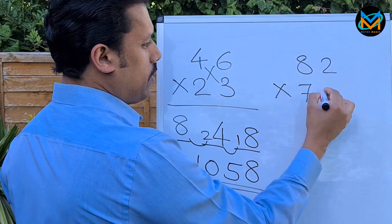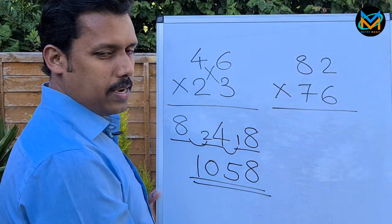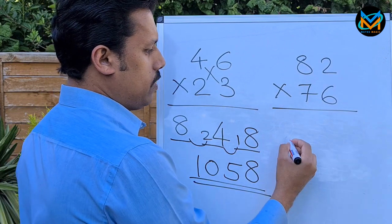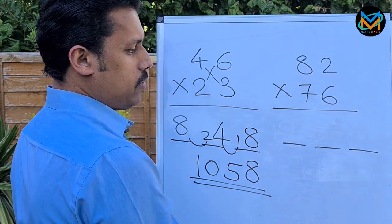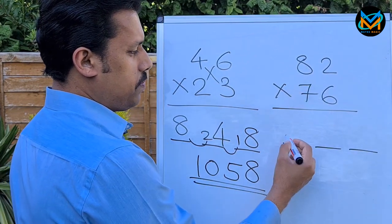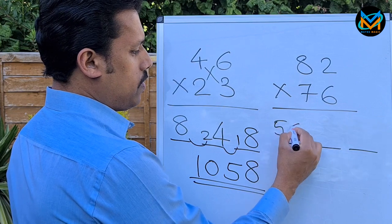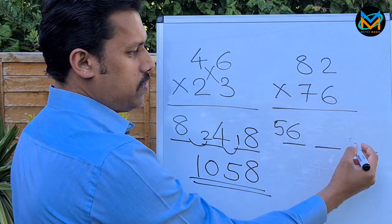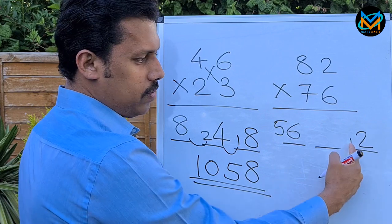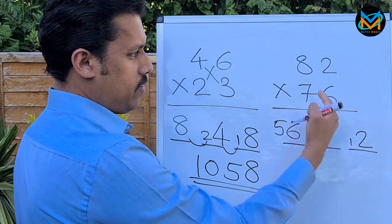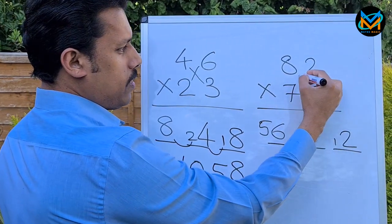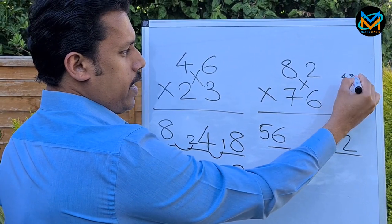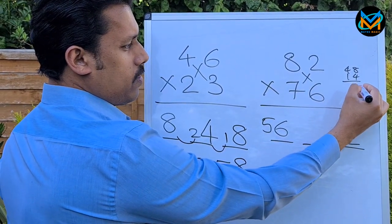82 times 76 - it's a big number. Same thing, three digits. 8 into 7 is 56, 2 into 6 is 12. Cross multiply: 8 into 6 is 48, 7 into 2 is 14, so your answer is 62.